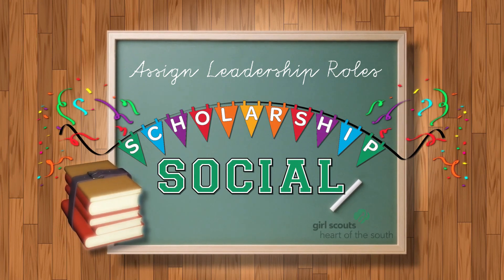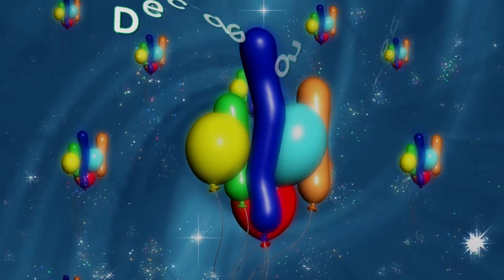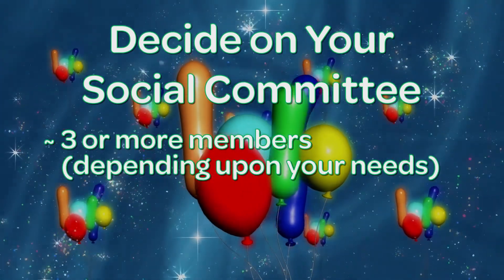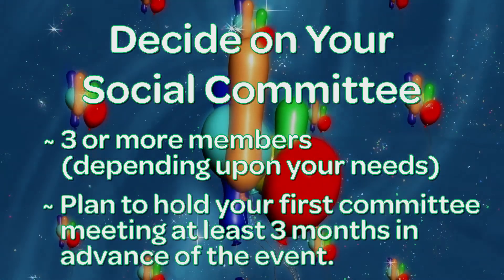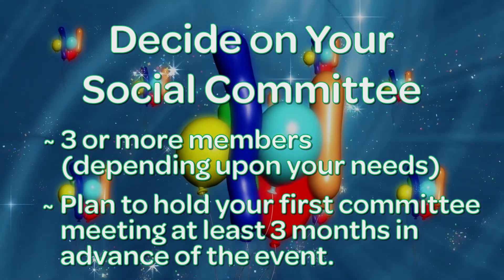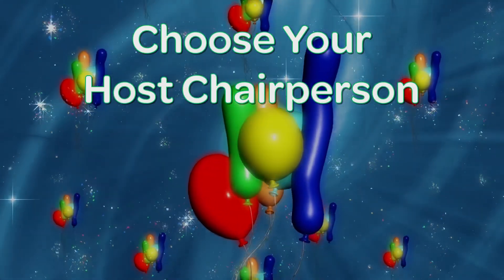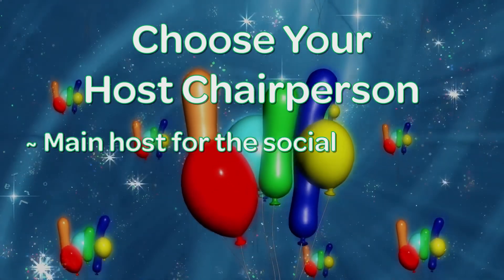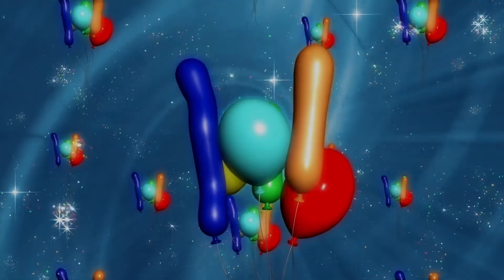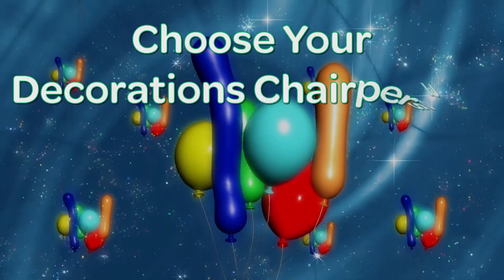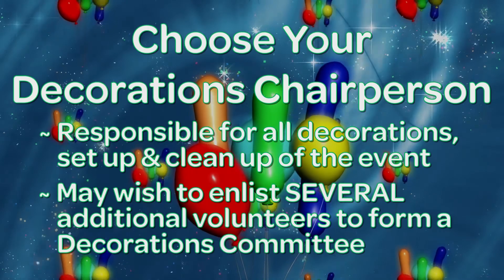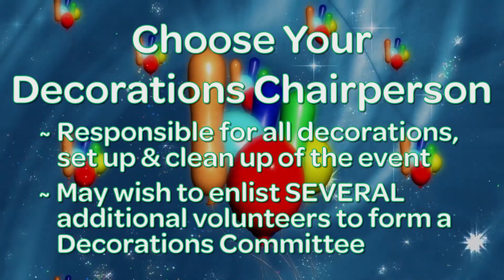Step 1: Assign leadership roles. Decide on your social committee. On this committee there should be at least three members or more depending upon your needs. The first committee meeting should be held about three months before you want to host your social. Choose your host chairperson. This person is the main host for the social, as well as the liaison between the service unit and the council's fund development staff. Choose your decorations chairperson. This person is responsible for the decorations and the setup and the cleanup of the event. This may be a good area to enlist several volunteers as helpers.